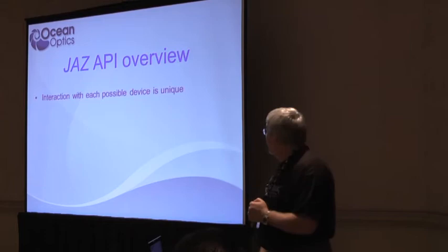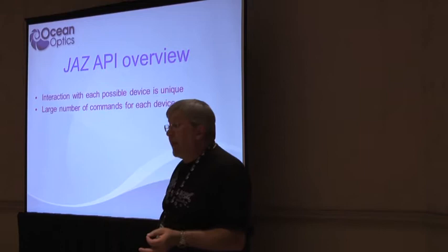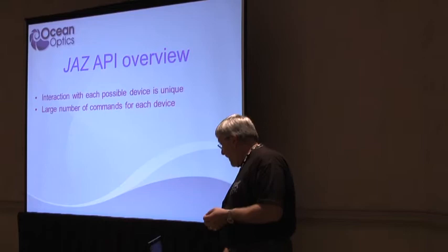One of the big things with the API is that interaction with each possible device is unique — all the commands are different, so there are different ways to communicate with each of them. We simplify that through the API. There's a large number of commands for each device. A spectrometer may not have so many commands, but a LAMP module or the Indy may have a lot of commands available — a lot of things you can do. And those are all enumerated in the API.